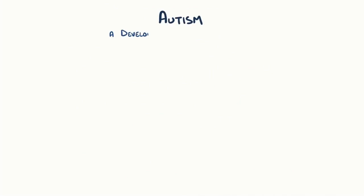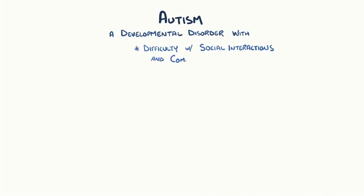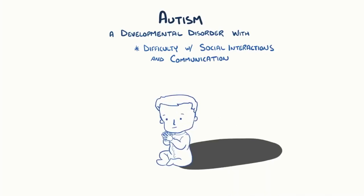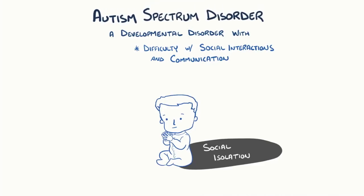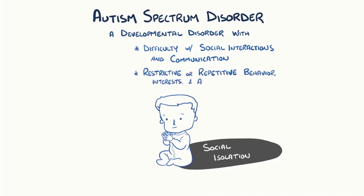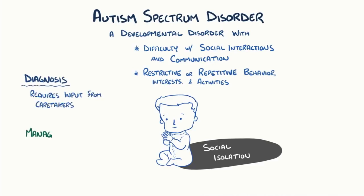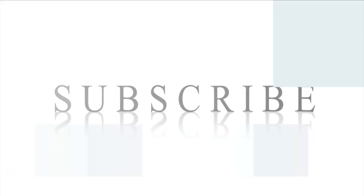As a quick recap: autism is a developmental disorder where an individual has difficulty with social interactions and communication, often leaving them socially isolated. This disorder exists along a spectrum of communication and interaction deficiencies, as well as restrictive or repetitive behaviors, interests, and activities. A diagnosis of Autism Spectrum Disorder requires significant input from caretakers, and management of the disorder is highly individualized.